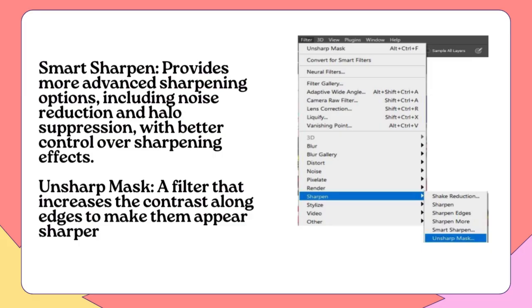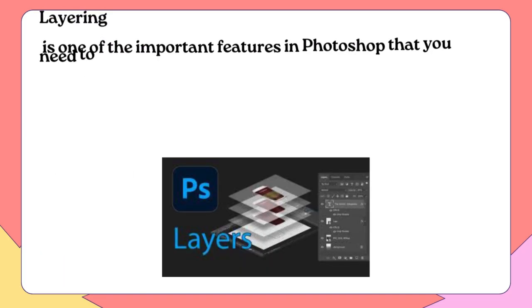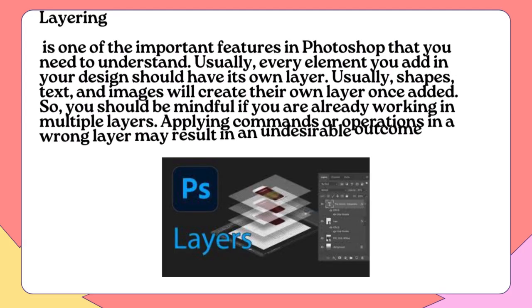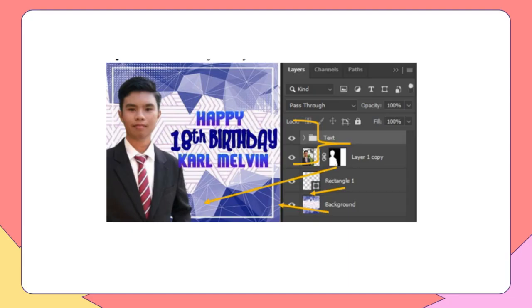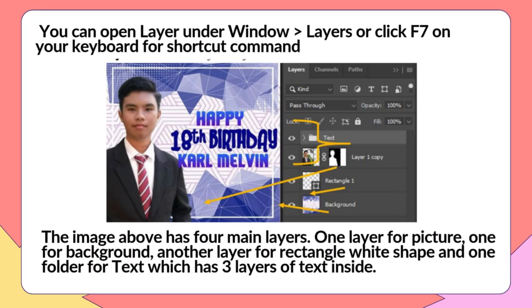Layering is one of the important features in Photoshop that you need to understand. Every element you add in your design should have its own layer. Usually, shapes, text, and images will create their own layer once added. You should be mindful if you are already working in multiple layers, as applying commands or operations in the wrong layer may result in an undesirable outcome or no effect at all. You can open Layers under Window > Layers, or click F7 on your keyboard as a shortcut. The image has four main layers: one for the picture, one for background, one for a rectangle white shape, and one folder for text which has three layers of text inside.